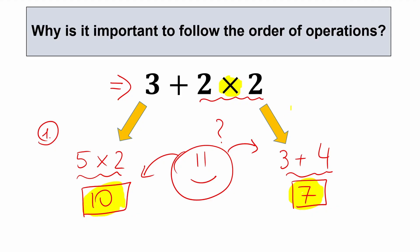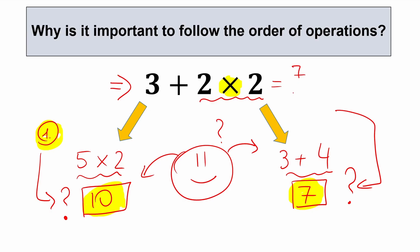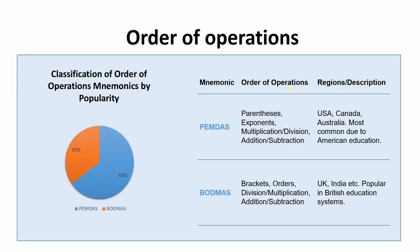I really hope you understand why it's important to follow the order of operations. If you solve this question however you want, one group says 10 is correct, another says 7 is correct. We need to choose one option. I'll explain how to solve this according to order of operations, which is an extremely important part of basic math.